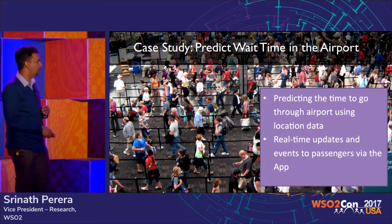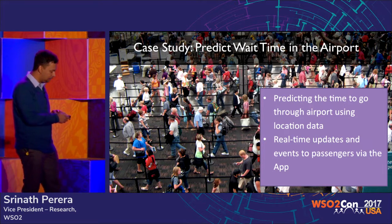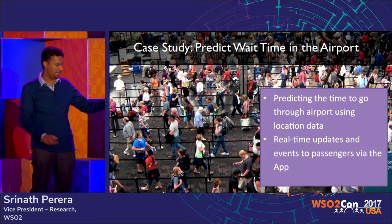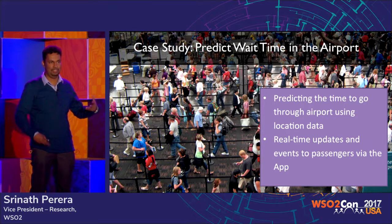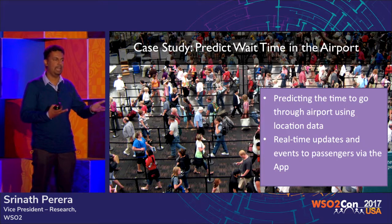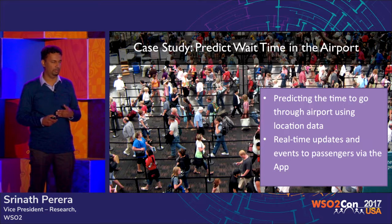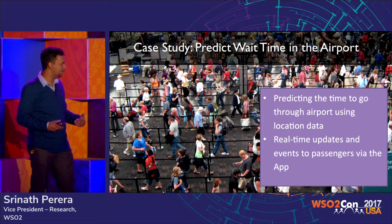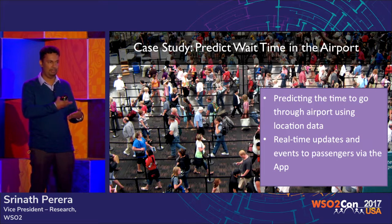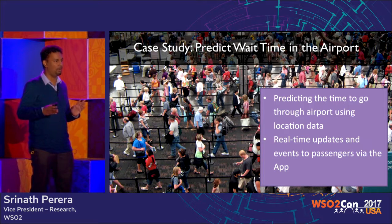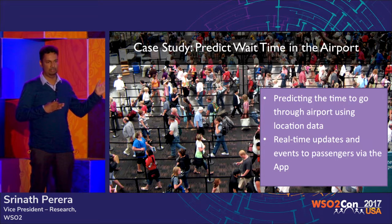Here's an example model that's actually in production. What it does is use historical data to predict how long an average customer takes to go through security checkpoints at an airport. Using model predictions, it notifies customers on the app and tells them: for today, you need to come two hours before versus one hour, and it keeps updating.